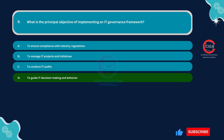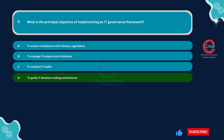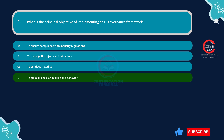IT governance frameworks provide structures, processes, and mechanisms to guide decision-making within the IT function of an organization. They establish frameworks for making strategic IT investment decisions, prioritizing projects, managing risks, and ensuring alignment between IT initiatives and business objectives. Ultimately, the goal is to ensure that IT resources are utilized effectively and efficiently to support organizational goals.